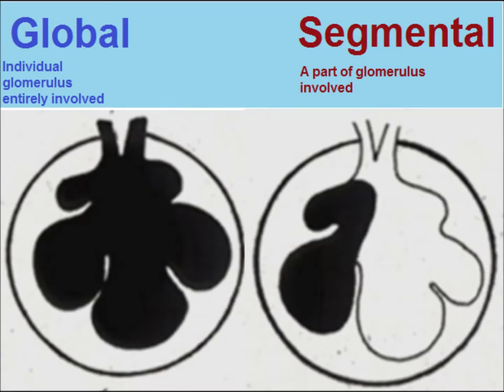Now, pertaining to a single glomerulus: if the whole glomerulus is involved, it is global. If only a portion of the glomerulus is involved, it is called segmental. So we have learned diffuse and focal, and segmental and global.